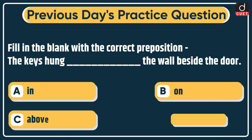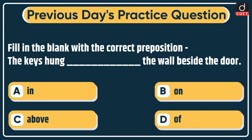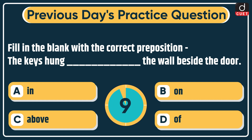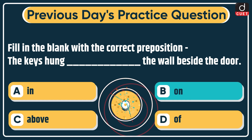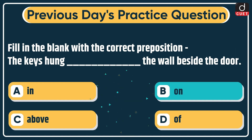The question was: fill in the blank with the correct preposition. 'The keys hung dash the wall beside the door.' Options: In, On, Above, Off. The correct answer is option B: On.